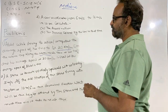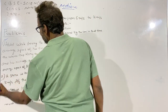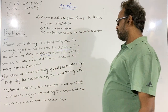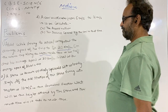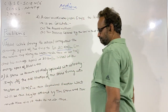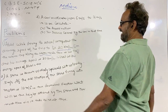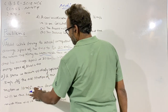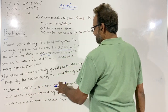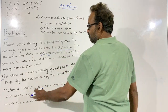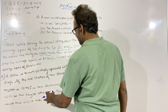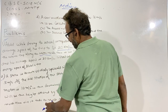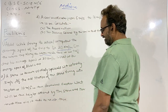Let's see the second problem. A stone is thrown vertically upwards with a velocity of 5 meters per second. If the acceleration of the stone during its motion is 10 meters per second squared in the downward direction, what will be the height attained by the stone, and how much time will it take to reach there?